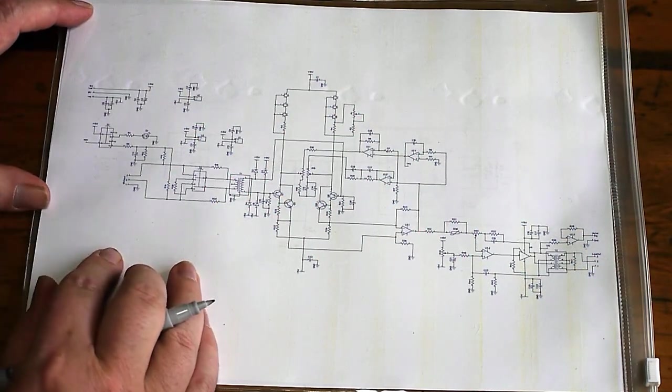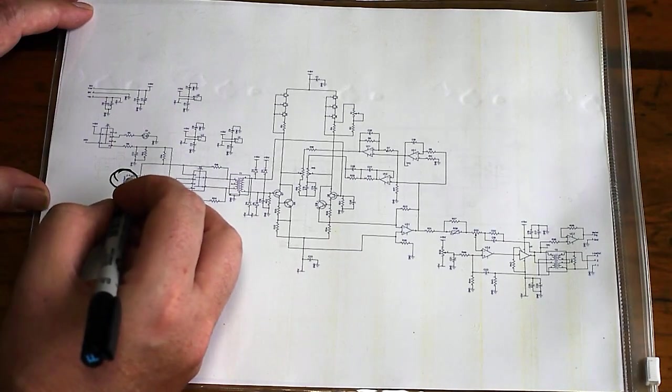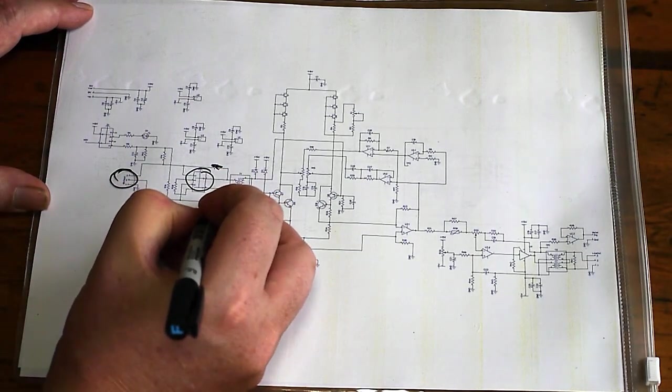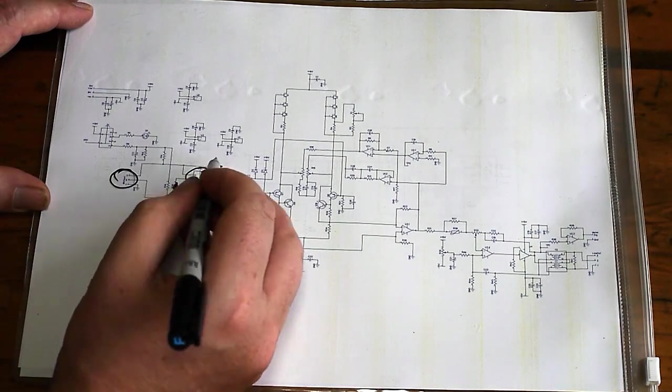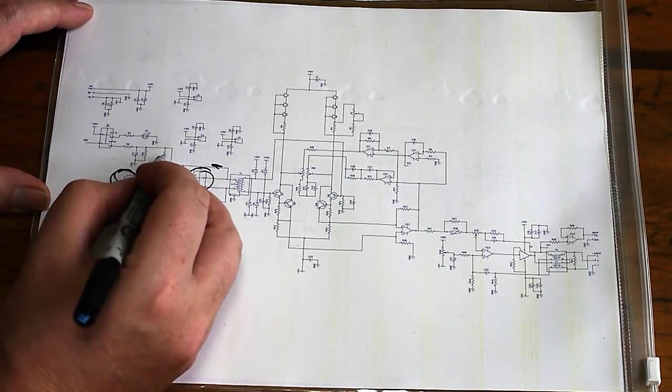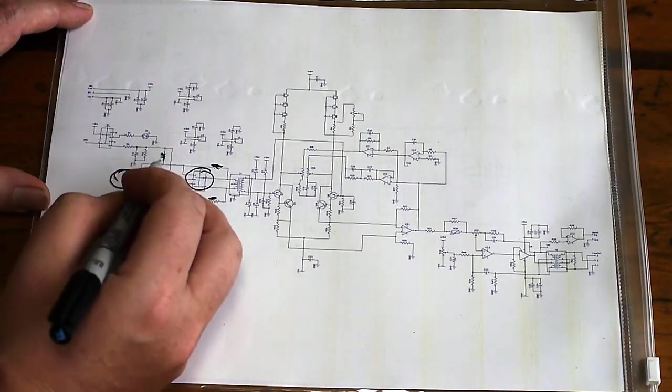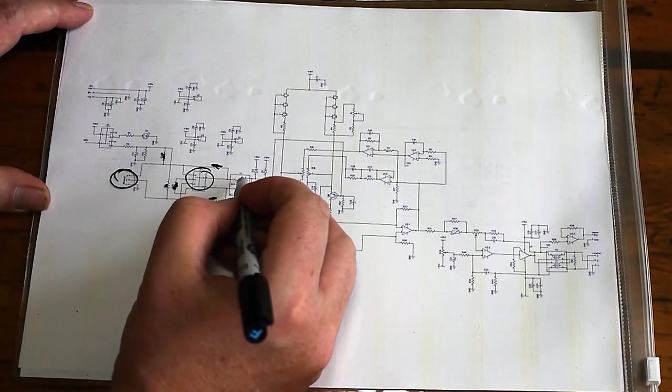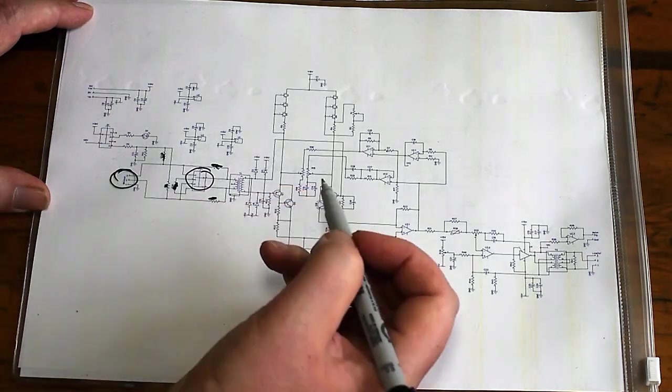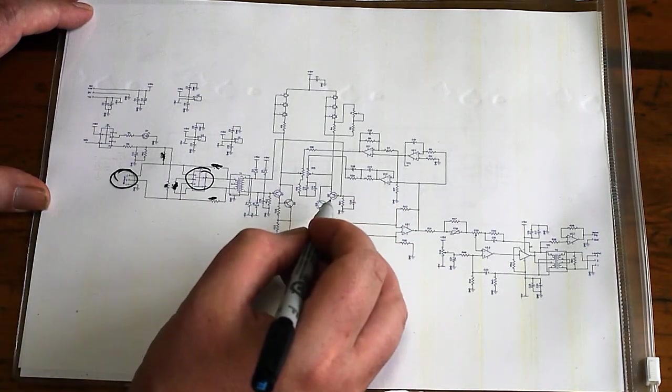I'll have a brief run through the schematic. That's our input terminals there. We'll see there's a pad switch, and these are the resistors that make up that 20 dB pad network. The phantom power switch is here, and these are the two 6.8k resistors that apply phantom power. There's our input transformer, a 2-to-1 step up, and that applies the signal to our differential amplifier.